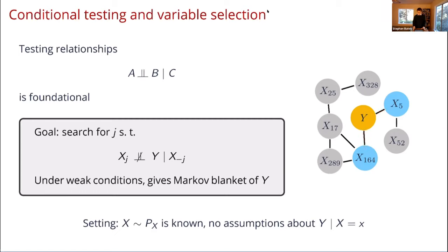Lastly, localization: detecting an association somewhere on a chromosome is not enough, because neighboring SNPs are statistically correlated due to linkage disequilibrium from the inheritance process. A detected association near one location could actually be caused by a causal variant elsewhere on the chromosome. To prove that a given region is causal and not caused by a neighboring region, I condition on all genotypes outside a window of interest and run the same randomization test — forcing digital twins to match the real offspring everywhere outside the target region.